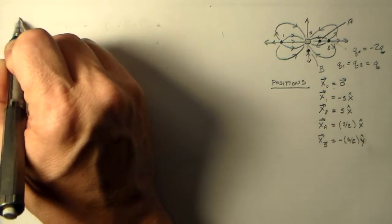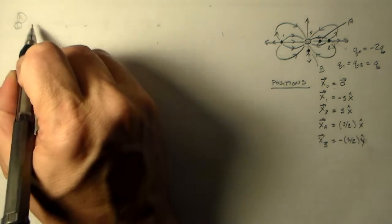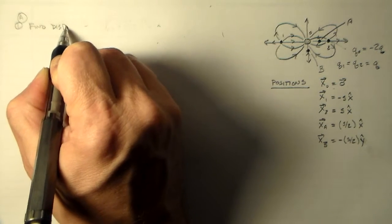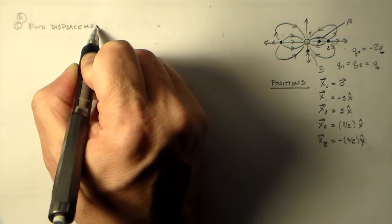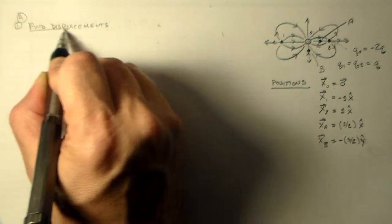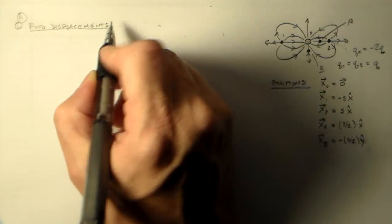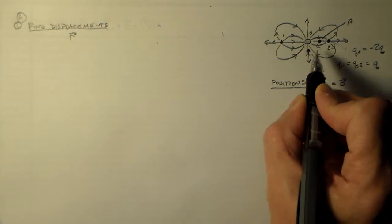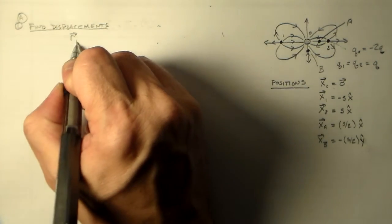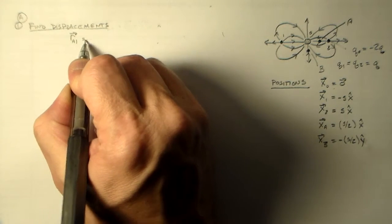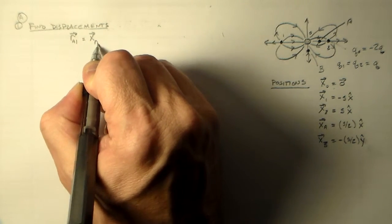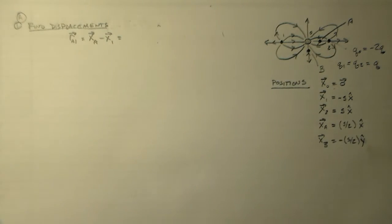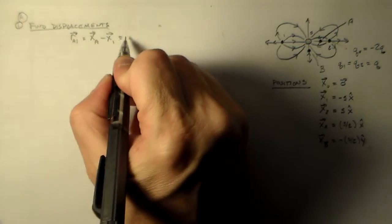So let's do this for A first. We want to find the displacements. Alright, so the displacement from 1 to A is equal to xA minus x1, right? So A we just said was s over 2 in the x hat direction. We said that 1 is at minus s. So we have minus minus s x hat.